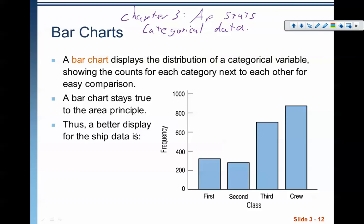The first thing we have here is a bar chart. A bar chart displays the distribution of a categorical variable. It tells us the counts for each category next to each other for easy comparison. Bar charts stay true to the area principle, so as long as they're not in 3D, they're a good display. Notice on the left-hand side, it's not like a traditional XY coordinate graph because the Y axis is the frequency, also known as the counts, and the X axis isn't necessarily in a particular order.